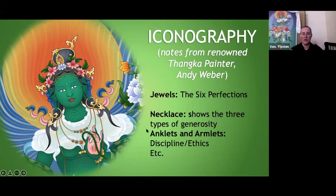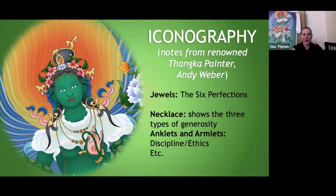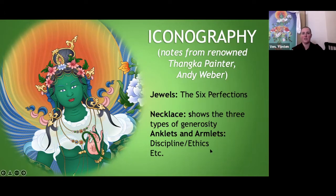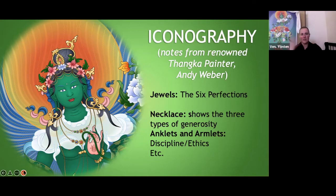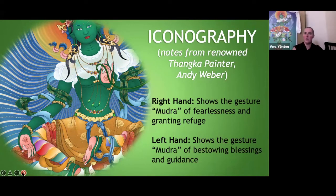Her three fingers not holding the stem represent the three jewels of refuge — Buddha, Dharma, and Sangha. This is also the gesture of supreme enlightenment, and the two fingers holding the stem symbolize the union of method and wisdom — the fact that they're touching shows that union. The jewels all over her represent the six perfections. Most noteworthy is the necklace: she has three necklaces representing the three types of generosity — the generosity of material aid, offering freedom from fear, and loving kindness and teaching the Dharma. Her bracelets and anklets represent ethics. None of the jewels, fabrics, or flower crown is accidental — all symbolize parts of the path.